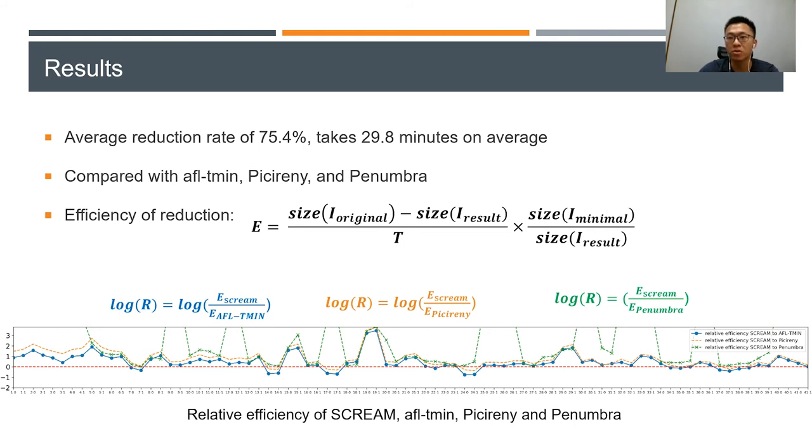We also compared this tool with AFL-Tmin, Perses, and Penumbra. We defined the efficiency of reduction as the reduced size over time multiplied by the ratio of ground truth and the size of the reduction. The relative efficiency of those tools are shown in the figure.